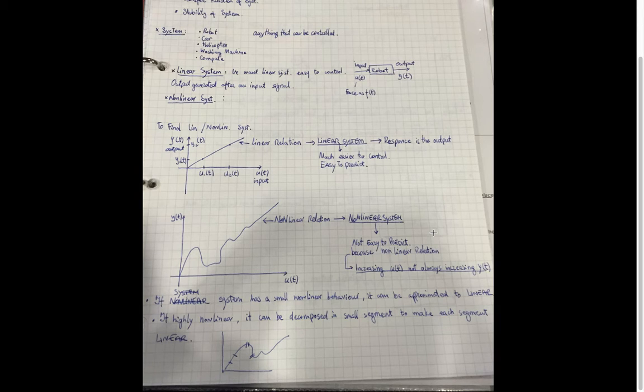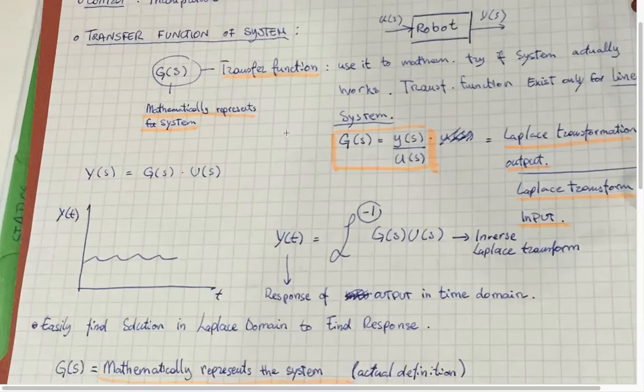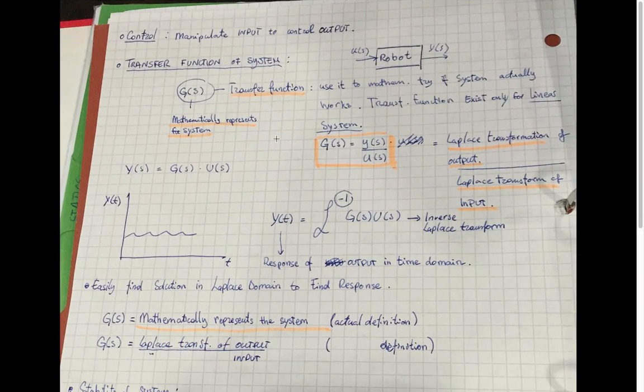Control is all about manipulating the input and the control and output. We have transfer function here, and transfer function is basically writing a system mathematically. That's the whole point of the transfer function, so that we can write a system mathematically.